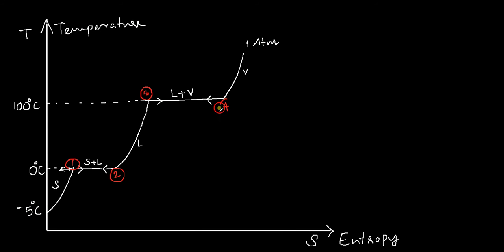We have explained what a saturation point is in the previous video. You have a solid saturation at point 1, at which point if you add an infinitesimal amount of heat to the ice at the solid saturation point, it will start to melt and start forming liquid. Similarly, if you add heat to H2O at the liquid saturation point, as soon as you add an infinitesimal amount of heat, the temperature of the saturated liquid at 0°C will start to rise from 0 up to 100°C.